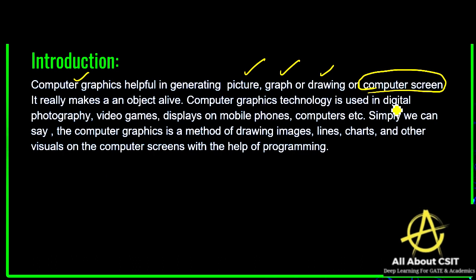Computer graphics technology is used in digital photography, video games, display on mobile phones, computers, and more. Whatever electronic gadgets you are working on, their display consists of computer graphics. Without computer graphics, you can't see images properly on the screen. Even mobile phone displays have computer graphics installed.